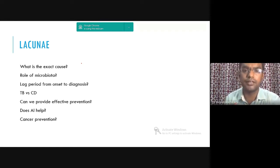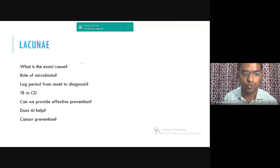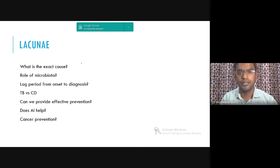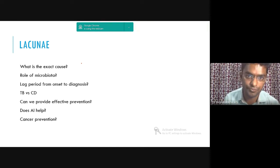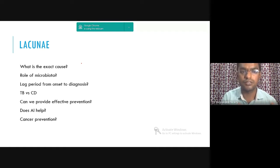There are a lot of lacunae which I find, and I also find it difficult to explain to patients. One of them is the exact cause — none of us know what it is. We presume it to be diet, genes, stress, and exposure to antibiotics in early childhood. It also varies with geographical area — as you move away from the equator, it is found more commonly. These are all presumptions. There is scope for those who want to pursue a career in research.